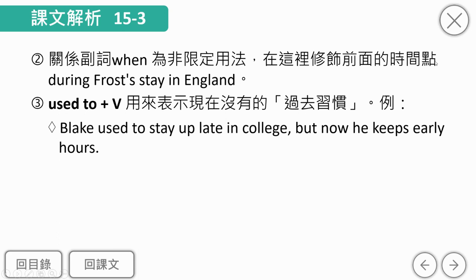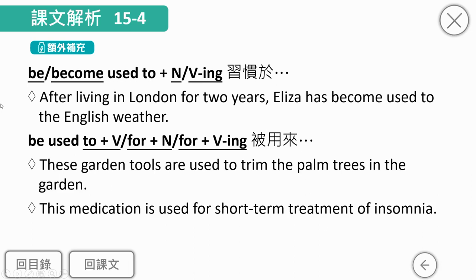这里的关系副词是非限定用法，修饰前面Frost旅居英国的时间点。'used to'后接原型动词，表示现在没有的过去习惯。另外，'be used to'是习惯于，to是介词，後接名词或动名词。若主词是物品或场域，'be used to加原型'则指被用来做什么。